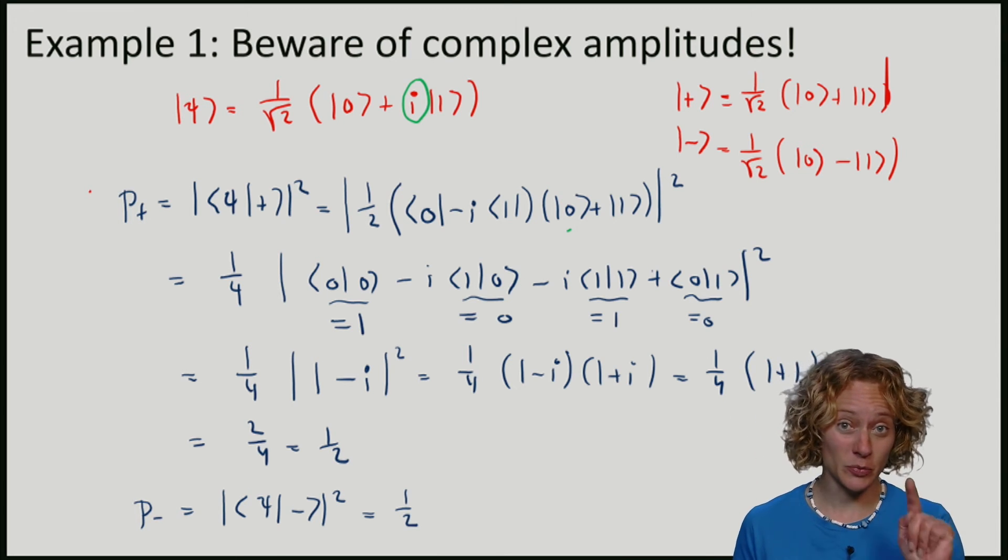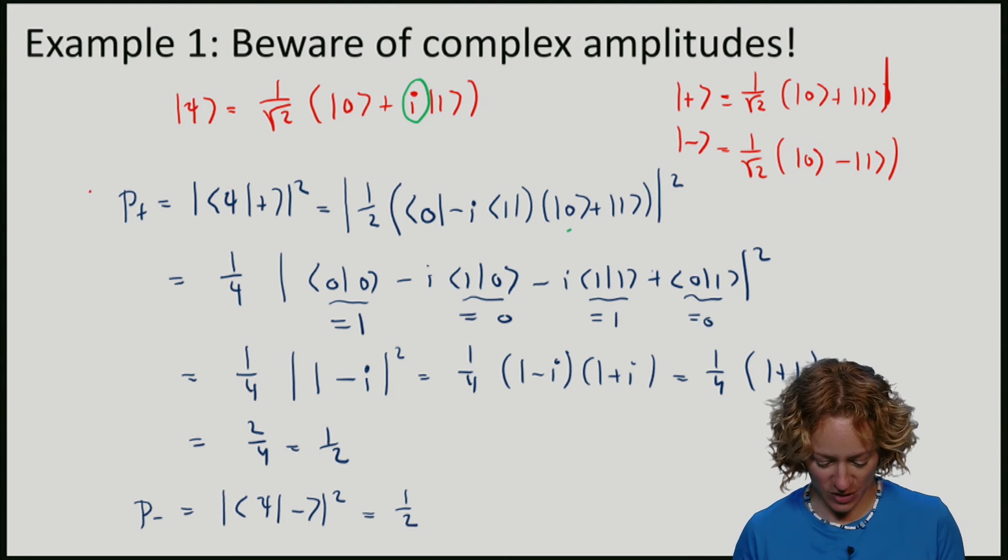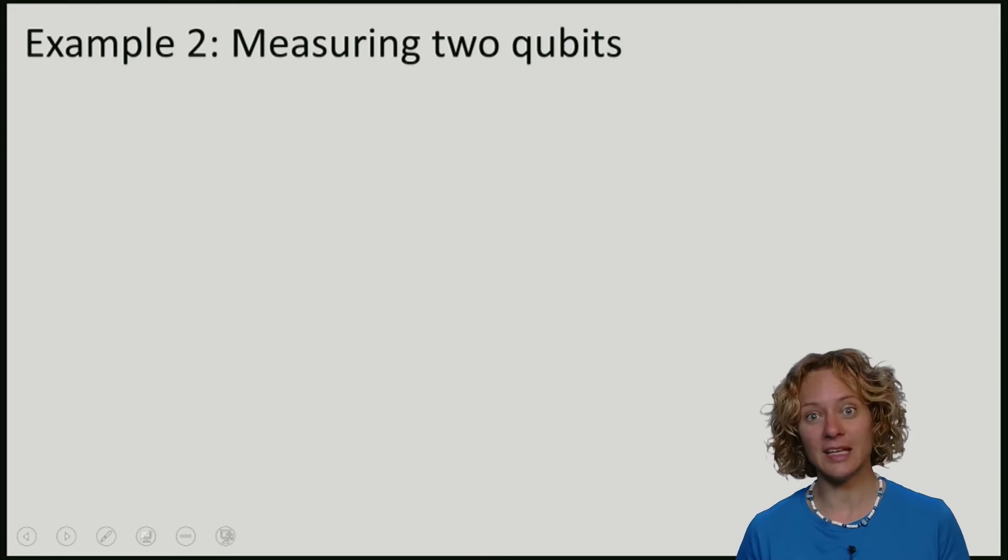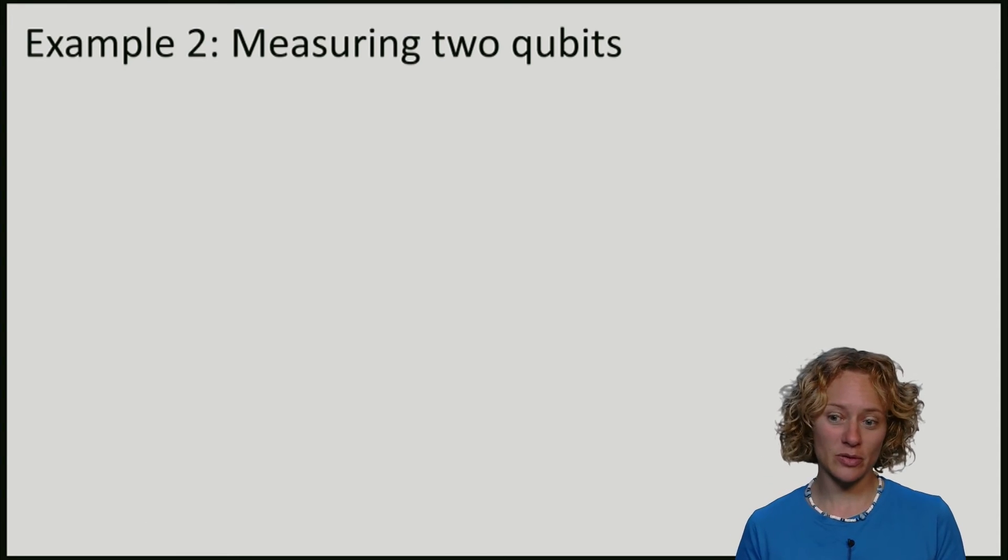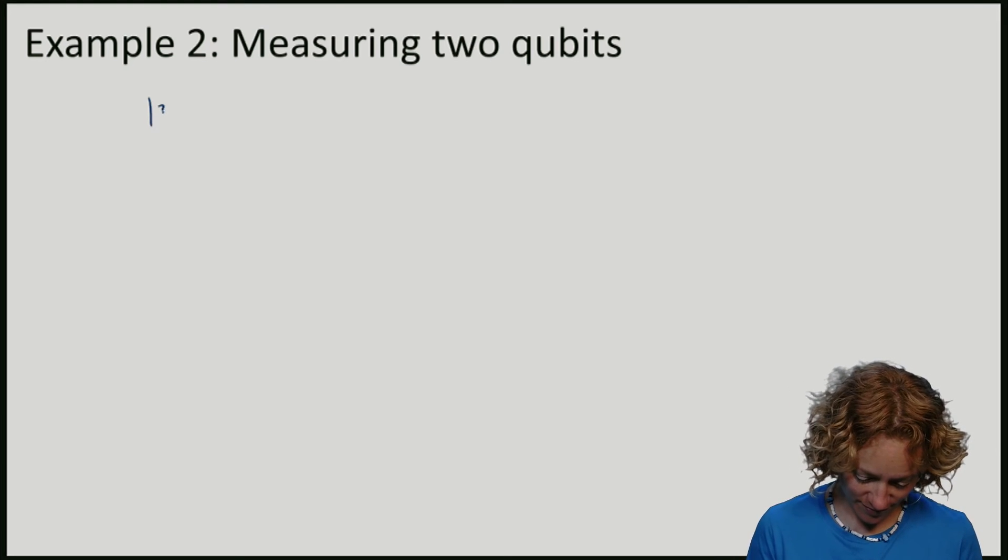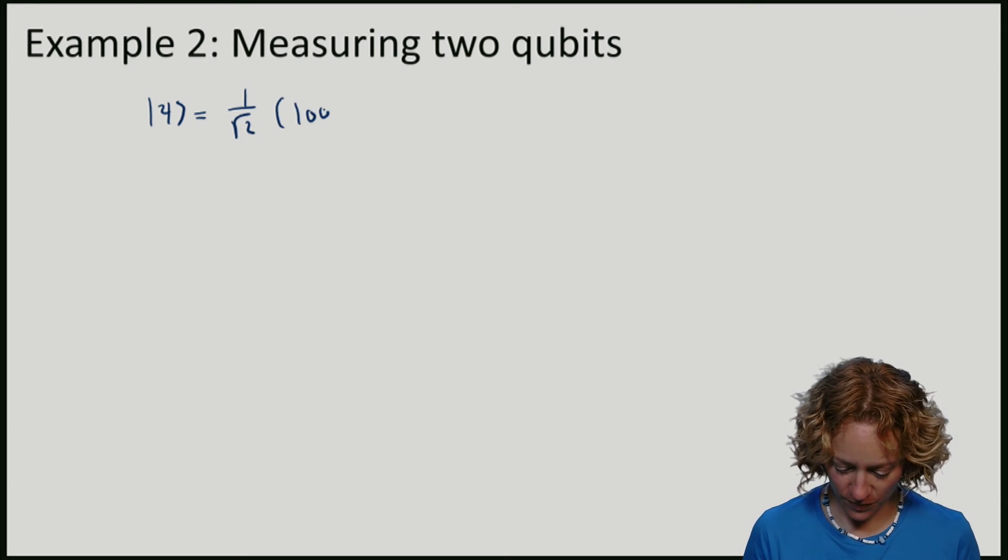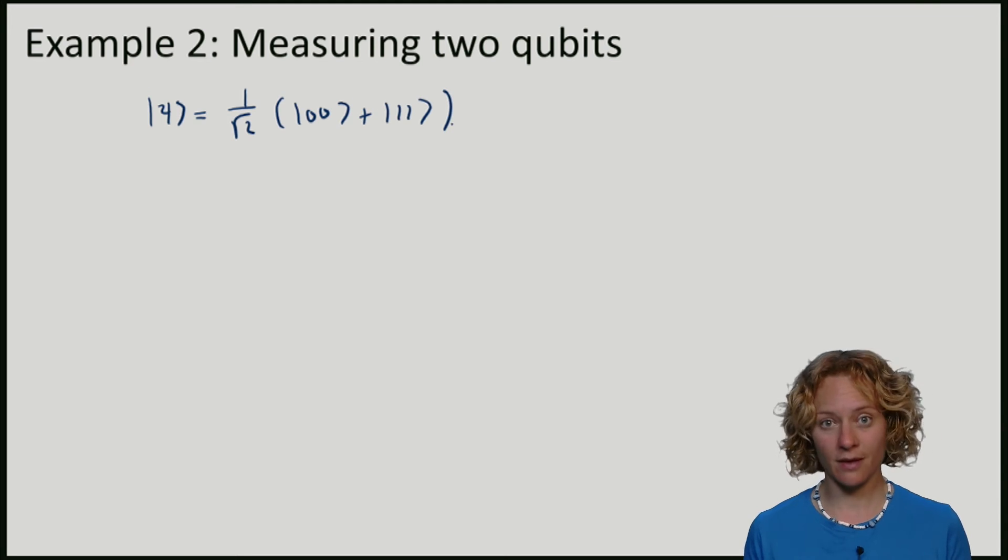Let's consider one more example where we measure two qubits, which are indeed in the famous EPR pair. We've seen this before, and now we will measure it in the standard basis. So this was the EPR pair.